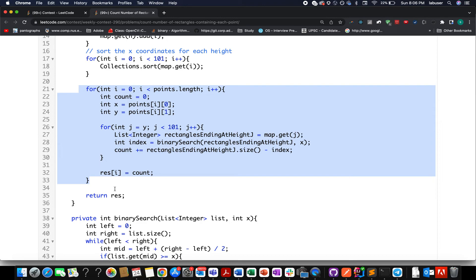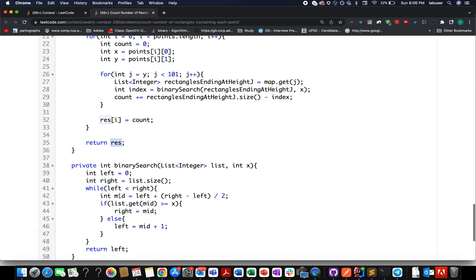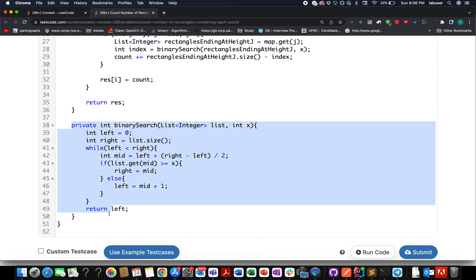Using this for loop, once I iterate over this entire for loop that means I have iterated over all the points, I simply return the result variable that I have created above. And this is the helper method which is actually performing the binary search over this list and this is the index that we were interested in finding out - how many elements are lower than this value of x. So let's try and submit this. Accepted with this.